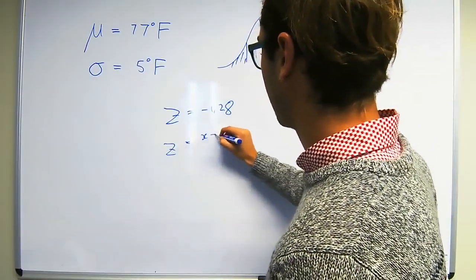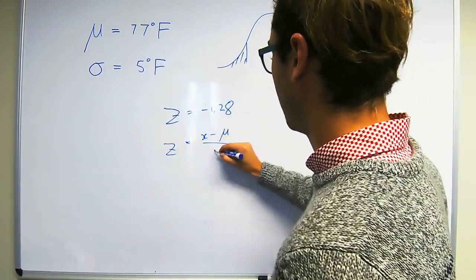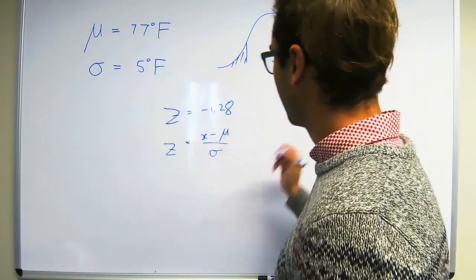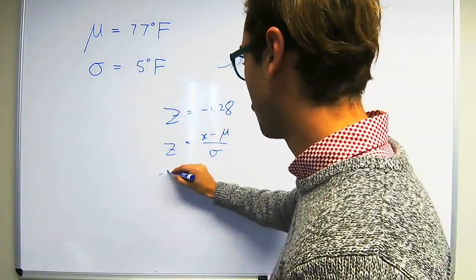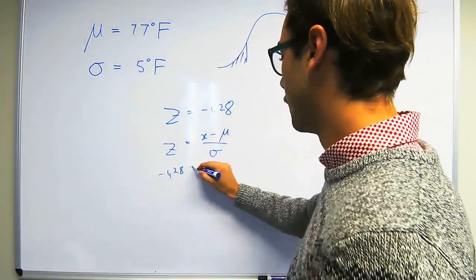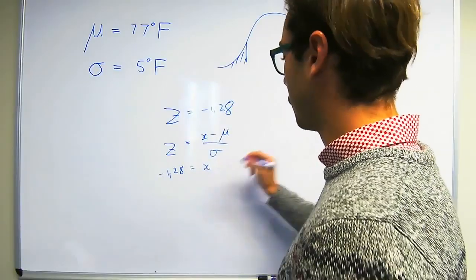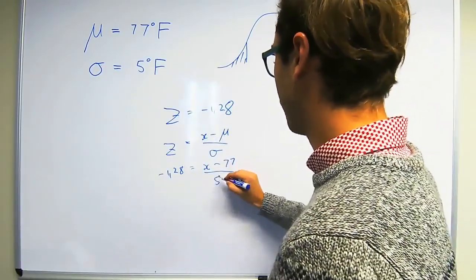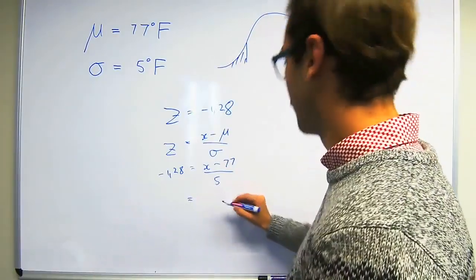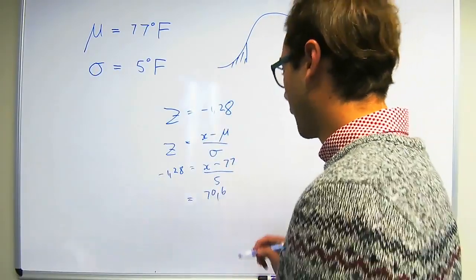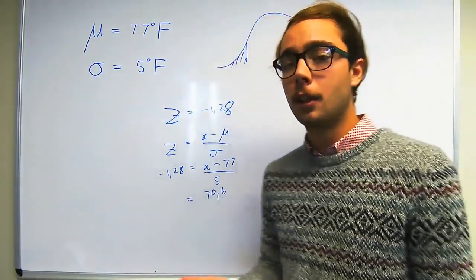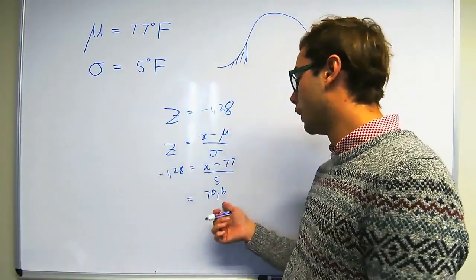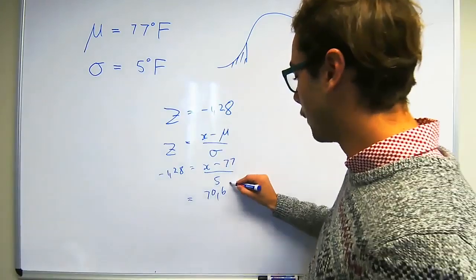Z is equal to x minus mean over standard deviation. So when we substitute in the values we get minus 1.28 is equal to x, which is what we're trying to find, minus 77 over 5. And that gives us 70.6. So the coldest 10% of days fall below 70.6 degrees Fahrenheit.